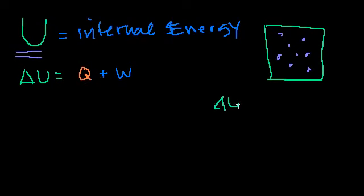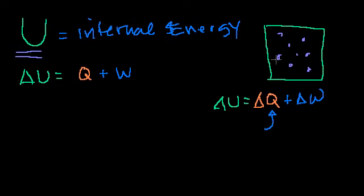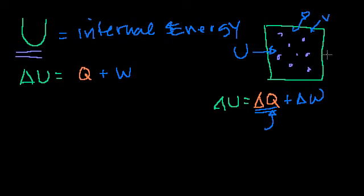If I were to write delta U equals delta Q plus delta W, to me this implies that at some point I had some amount of heat in my system, then a different amount, and I took the difference to get a change in heat. This implies that heat is somehow an inherent macro state of the system — and that's not the case. I cannot look at this system and tell you how much heat it has. I can tell you internal energy, pressure, volume, temperature — those are macro states.